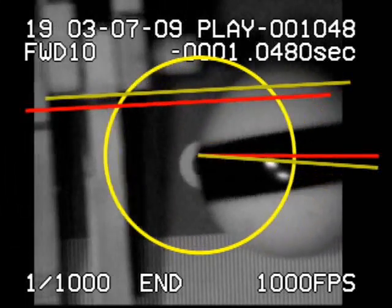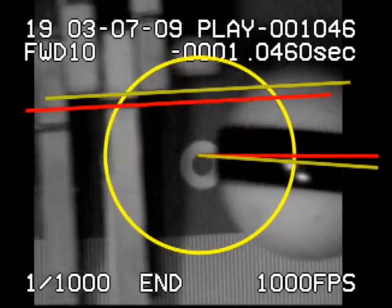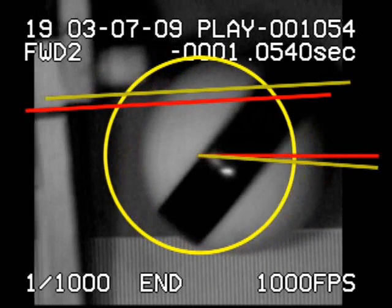With left English, the cue ball heads more to the right of target. Also notice that with the high squirt cue, our effective miscue limit is further out on the ball. We can hit with a greater tip offset.